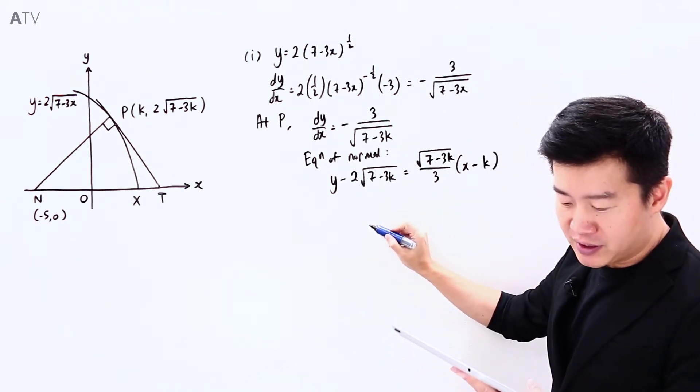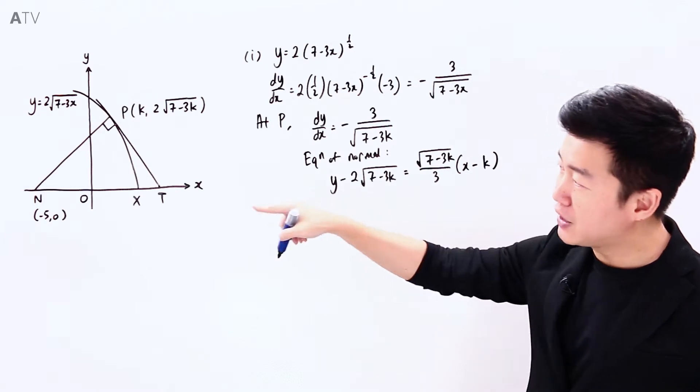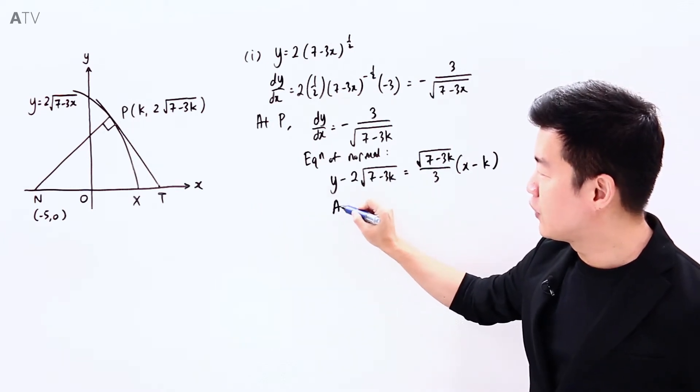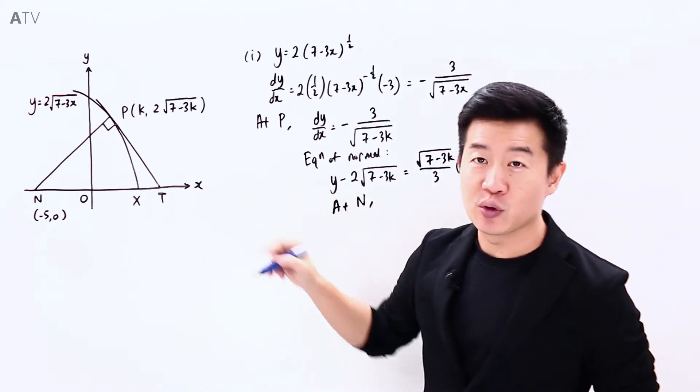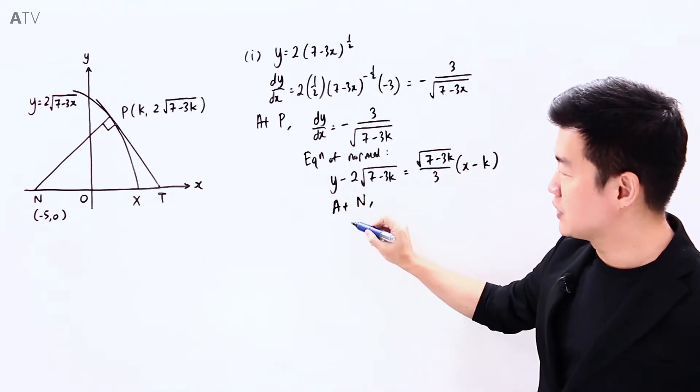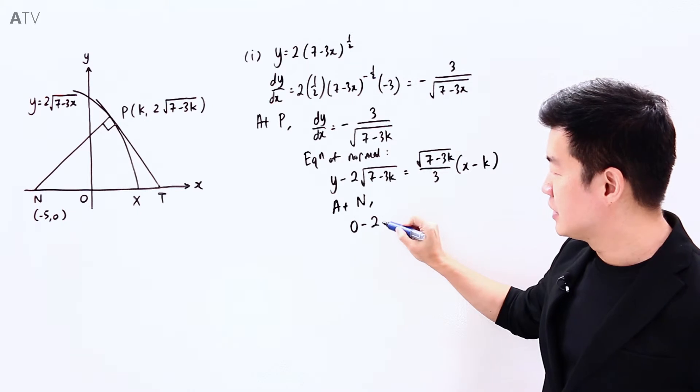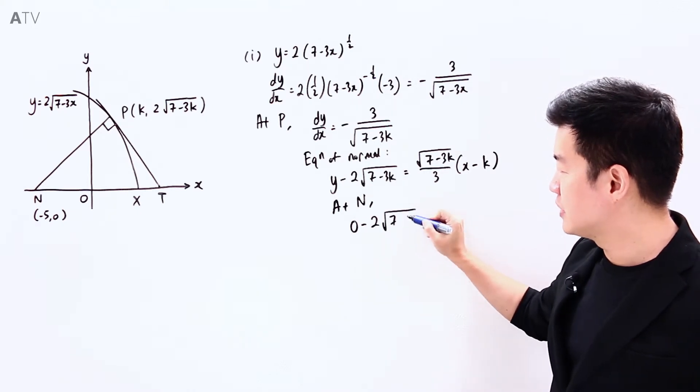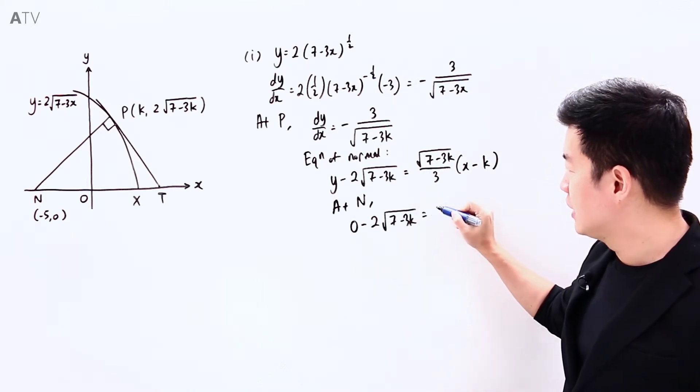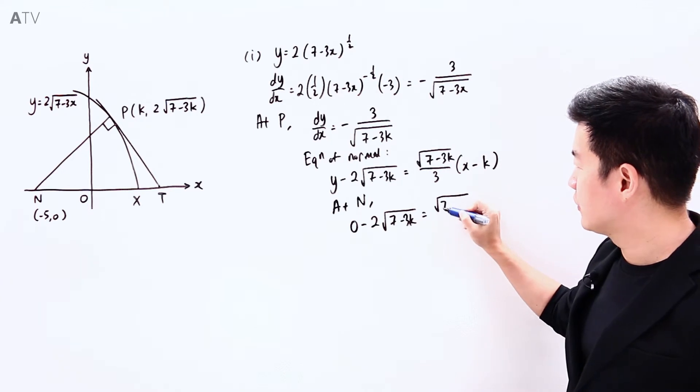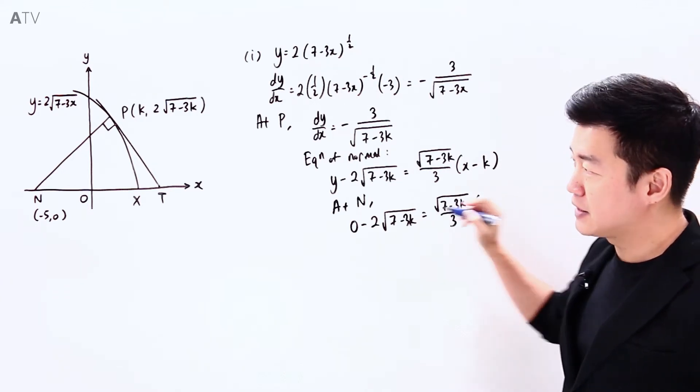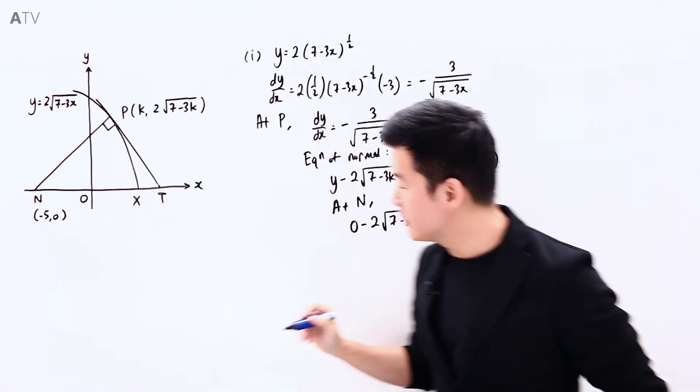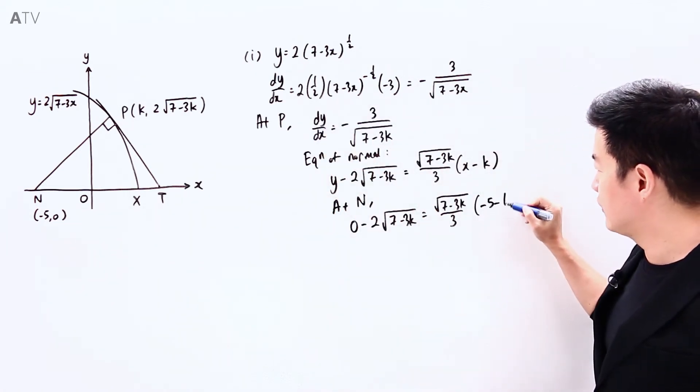And since it passes through the point (-5, 0), the point N, for this equation at point N, x is going to be equal to negative 5, y is going to be equal to 0. So 0 minus 2 square root of (7 minus 3k) is equal to square root of (7 minus 3k) divided by 3, times (minus 5 minus k).